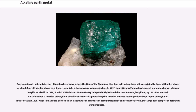Beryl, a mineral that contains beryllium, has been known since the time of the Ptolemaic Kingdom in Egypt. Although it was originally thought that beryl was an aluminium silicate, beryl was later found to contain a then unknown element when, in 1797, Louis-Nicolas Vauquelin dissolved aluminium hydroxide from beryl in an alkali. In 1828, Friedrich Wöhler and Antoine Bussy independently isolated this new element, beryllium, by the same method, which involved a reaction of beryllium chloride with metallic potassium.